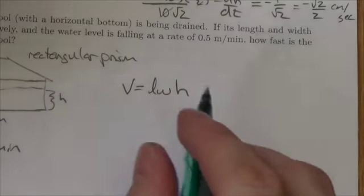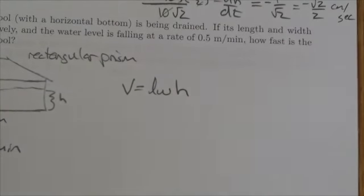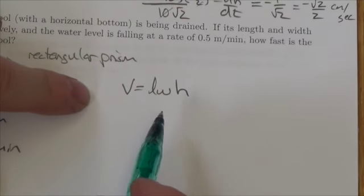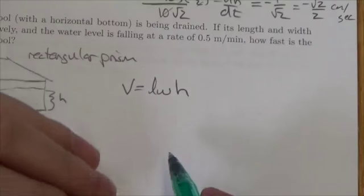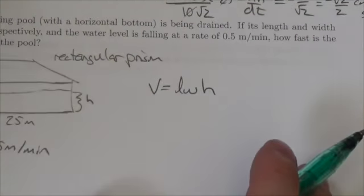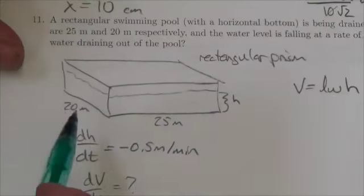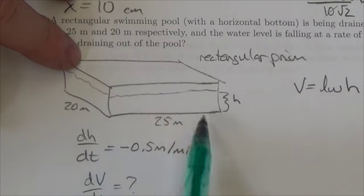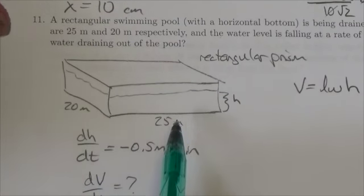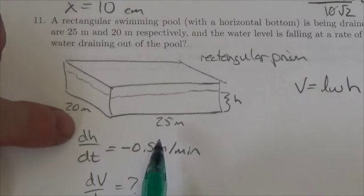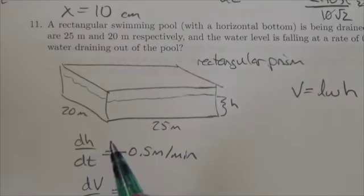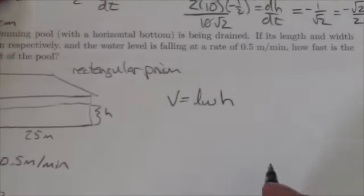But one of the hardest things about related rates problems is knowing when to substitute in a value and when to leave it here. Now in most cases you do not substitute in a value until after the derivative. However in this particular case, it's important to note that when the water is in the pool here, the width and the length of the volume of water will always be the same. These are constants. Whereas the height is the variable. If there are values that are constant in an expression, you do want to plug those in.